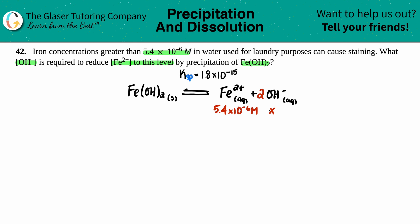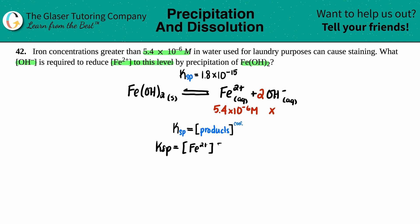Now let's write the Ksp formula. The general formula is that Ksp equals the concentration of the products raised to their coefficients. So: Ksp = [Fe²⁺][OH⁻]². The coefficient of 2 on the hydroxide means we raise that concentration to the second power. There's a 1 in front of iron so it stays as is. The iron concentration is 5.4×10⁻⁶, the hydroxide is x, and the Ksp is 1.8×10⁻¹⁵.